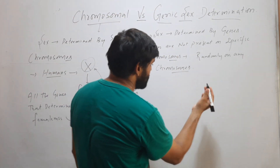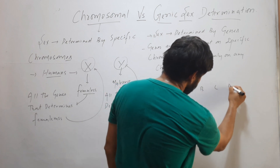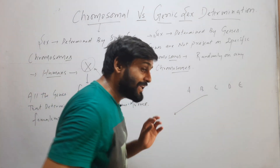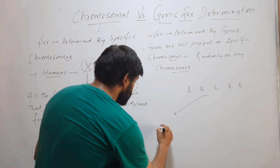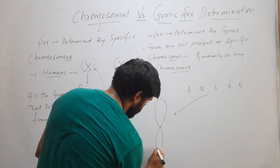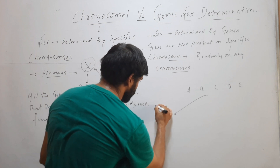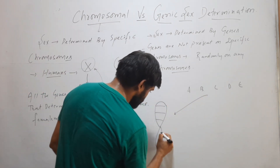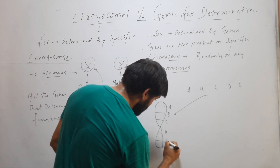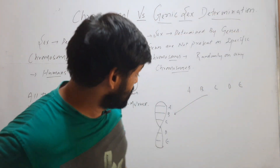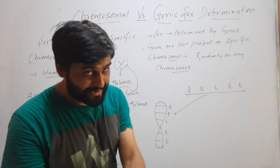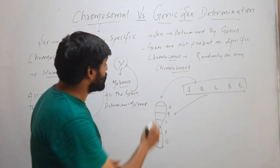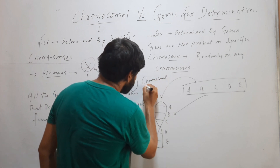Let's understand this with an example. Suppose we have five genes: A, B, C, D, E — and these genes are determining sex. When we say chromosomal sex determination, suppose this is our specific chromosome. All these genes A, B, C, D, E will be present on a single or specific chromosome. If these five genes are determining sex and are all present on one specific chromosome, then it will be called chromosomal sex determination.